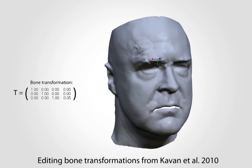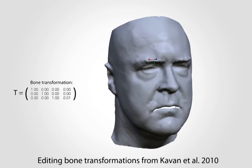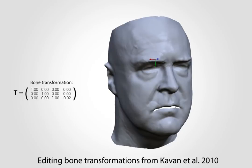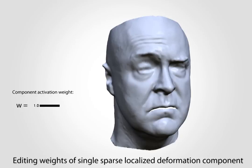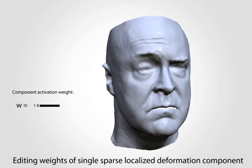In many situations, bone transformations tend to give too many degrees of freedom. We visualize this by editing the translation of one bone here, which quickly results in effects that were not part of the input data. In contrast, our components have a single activation weight parameter that is between 0 and 1.